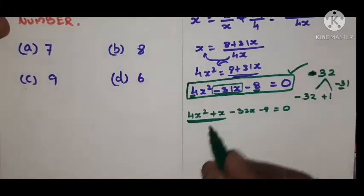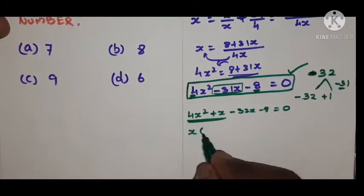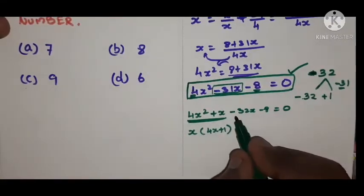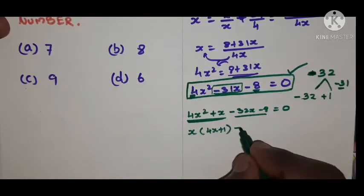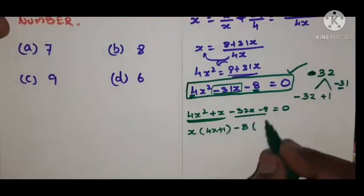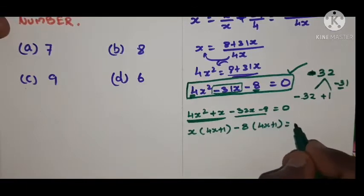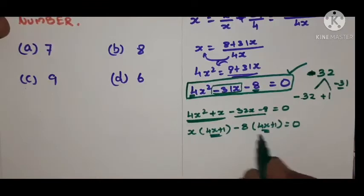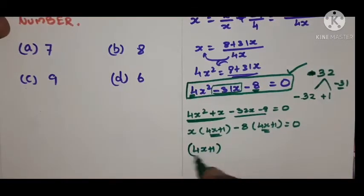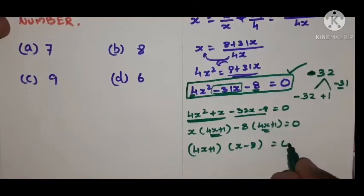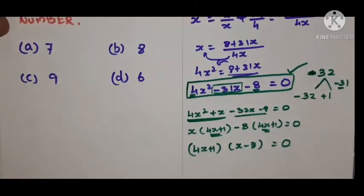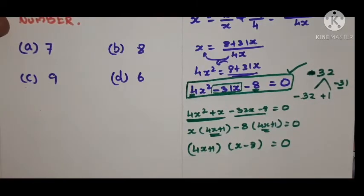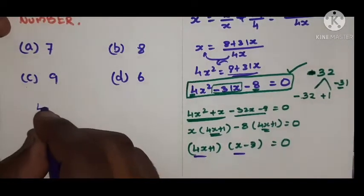Look at the first two terms — x is common, so taking x outside gives x(4x + 1). For the last two terms, −8 is common, so taking −8 outside gives −8(4x + 1). Now (4x + 1) is common in both terms, so we take it outside: (4x + 1)(x − 8) = 0. These are the factors of the polynomial.